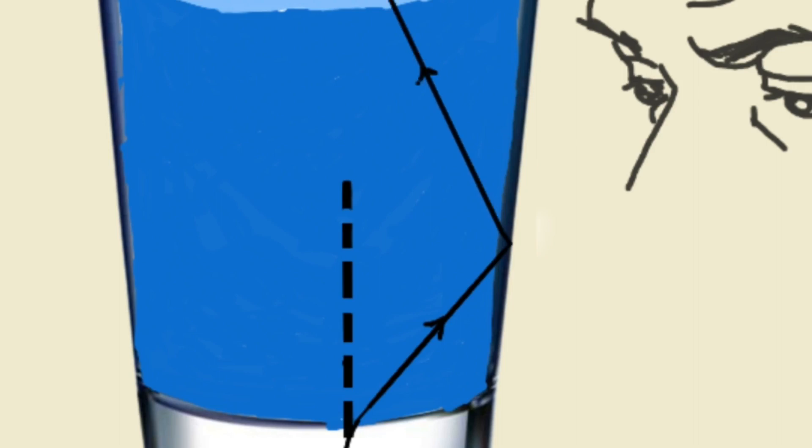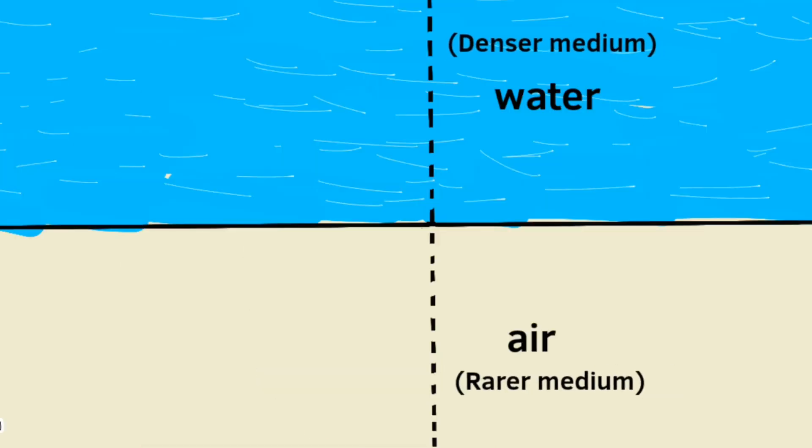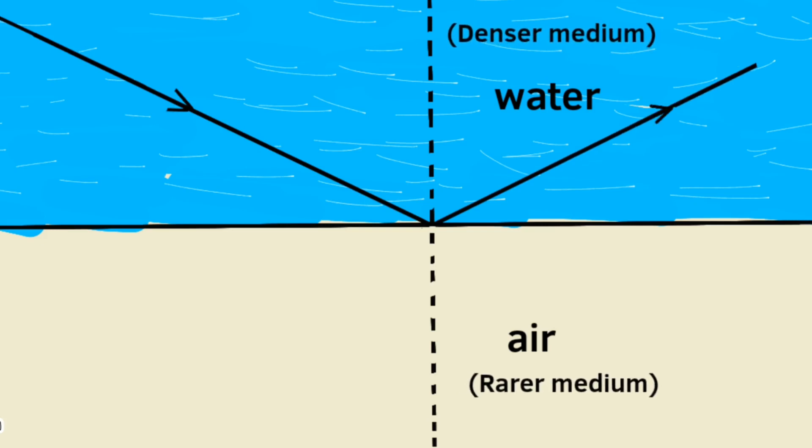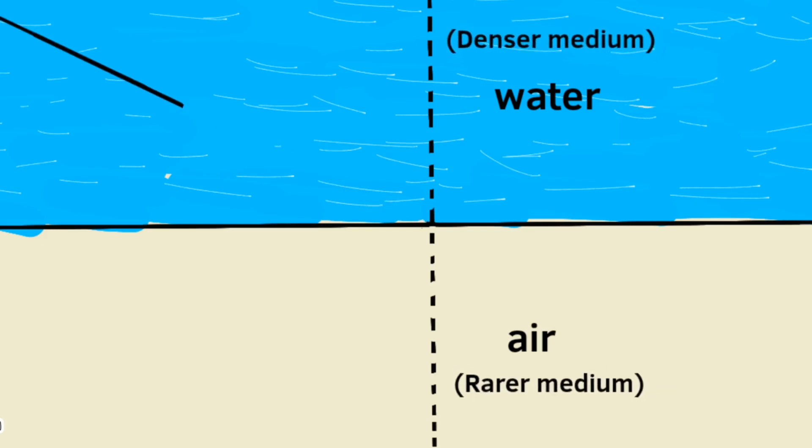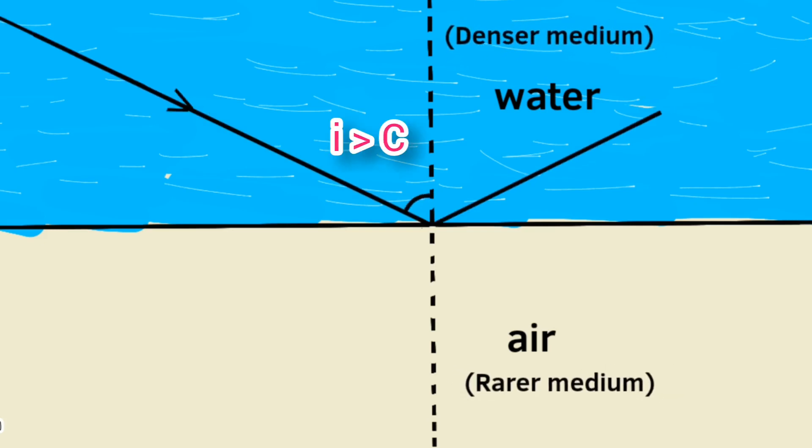This light ray never reaches our eye through the sides of the tumbler. In total internal reflection, the light ray is reflected into a denser medium at the interface when the angle of incidence is greater than the critical angle.